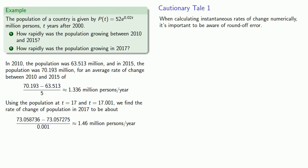When calculating instantaneous rates of change numerically, it's important to be aware of round-off error. Every time you round a number, you introduce an inaccuracy. This means you shouldn't round a number until you're done with it, until you've reached the very end of the problem. Then, and only then, can you round your final answers.